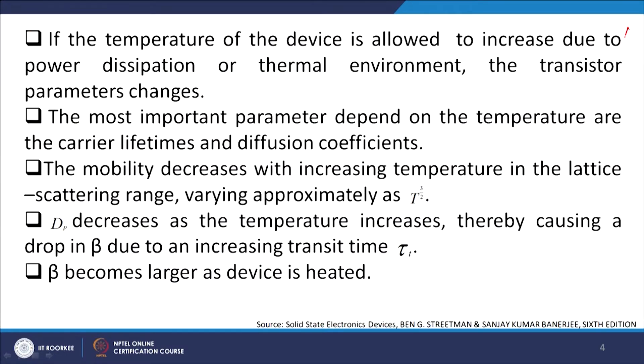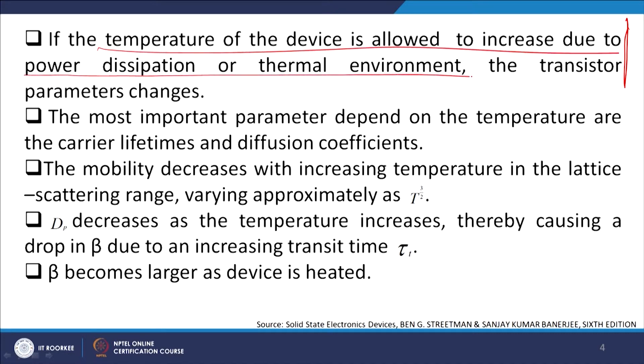If the temperature of the device is allowed to increase due to power dissipation or thermal environment, the transistor parameters change. Alpha and beta become functions of temperature, and current gain changes. The most important parameters affected are carrier lifetime and diffusion coefficients. As temperature increases, mobility actually falls down because the lattice itself starts to vibrate, causing electrons travelling through the lattice to be scattered by collision with lattice atoms — resulting in reduced mobility.